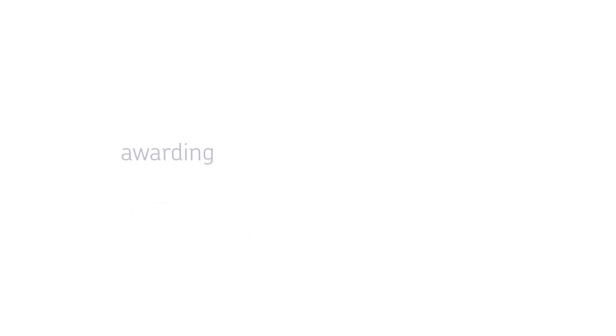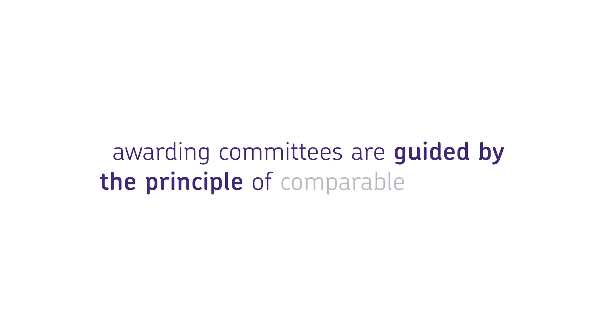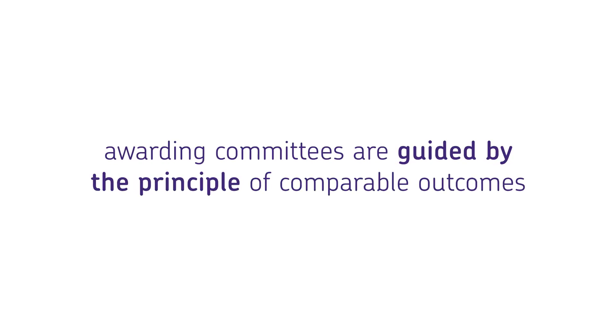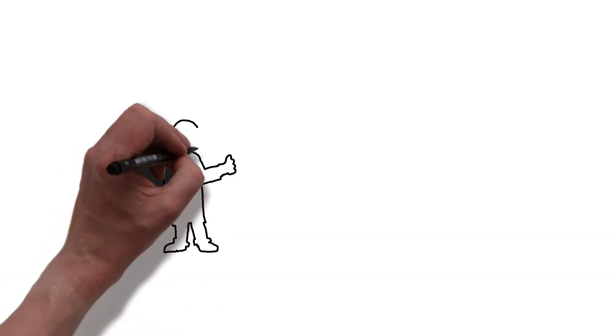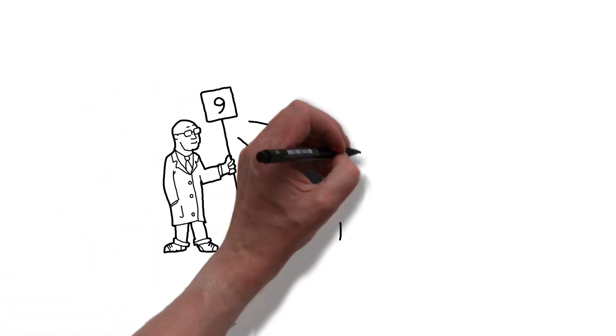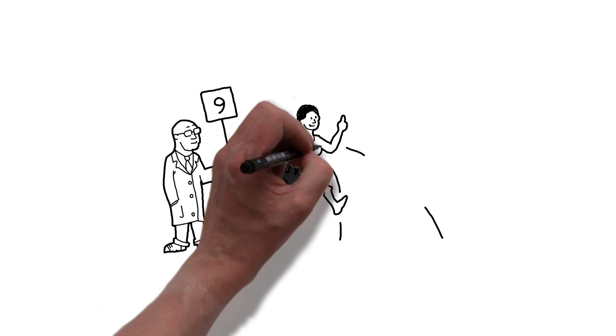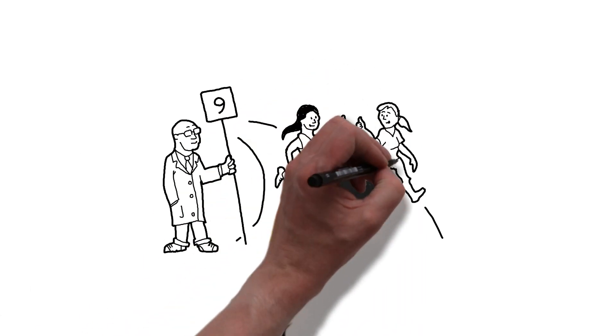Those awarding committees are guided by the principle of comparable outcomes — that's the principle that students should get the same grade this year that they would have got if they'd sat last year's paper. That means that all else being equal, we would expect this year's national outcomes to look similar to last year's.